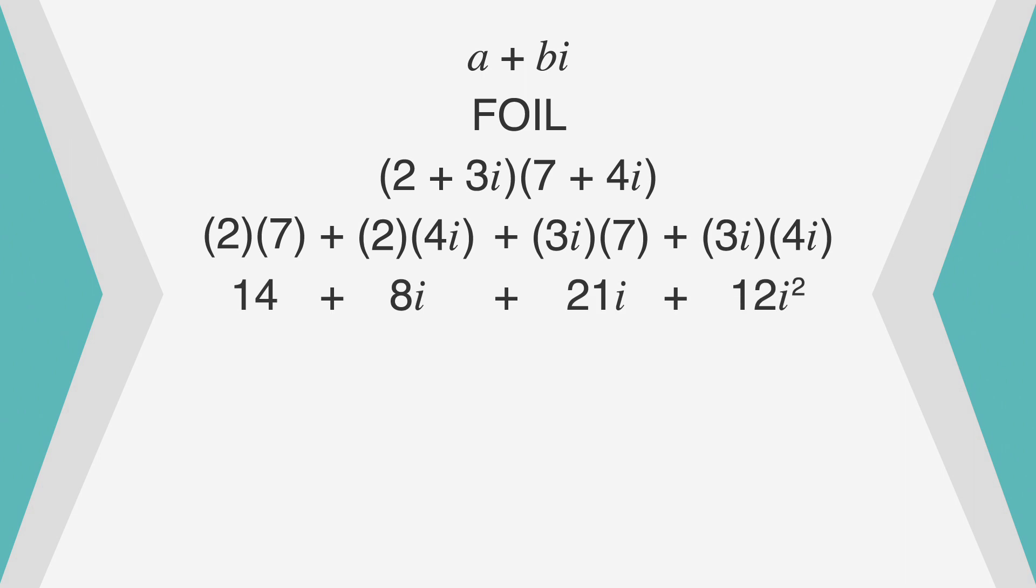Now let's do a little multiplication, which gives us 14 plus 8i plus 21i plus 12i squared. We'll combine like terms to get 14 plus 29i plus 12i squared. We know that i squared is negative 1, so we have 14 plus 29i plus 12 times negative 1, or 14 plus 29i minus 12. We're nearing the finish line. One last bit of subtraction, and we get our answer: 2 plus 29i.